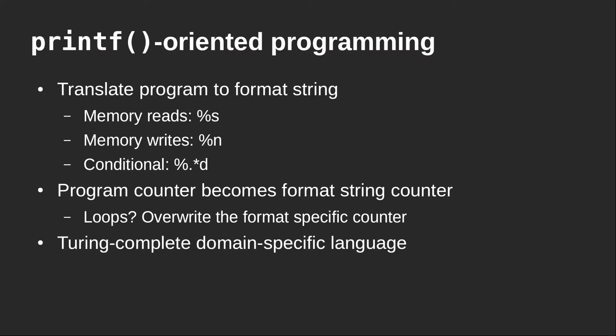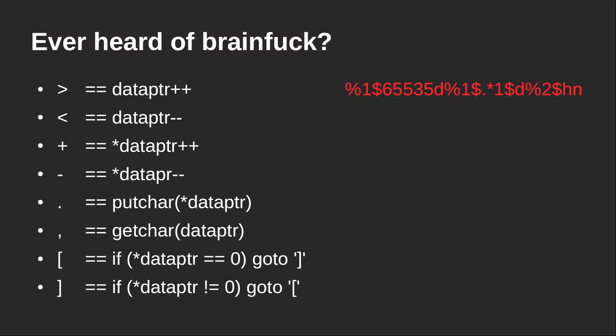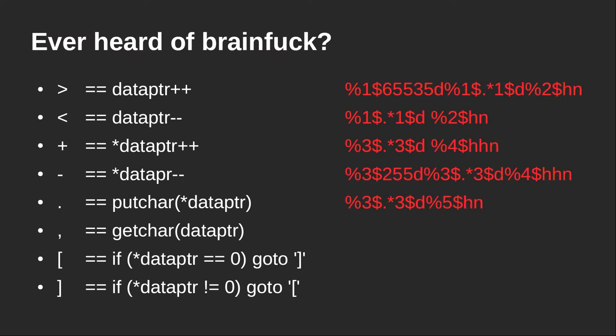We can move the program counter along. For loops, we can overwrite the format string counter as different parts of the format string are being printed, reset and jump around in it, and readjust our program counter to implement jumps. We present a Turing-complete domain-specific language. Have you ever heard of brainfuck? It's a fun Turing-complete language with only eight different symbols: move data pointer forward or backward, increment or decrement the value on the current cell, write or get a character, and jump conditionally back and forth. There is a format string statement for each of these operations.